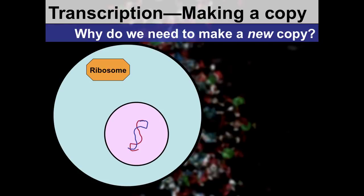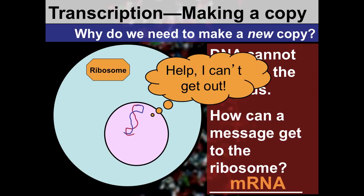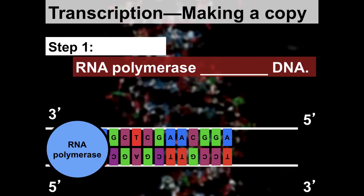Why do we need to make a new copy? DNA cannot leave the nucleus — the information for everything that happens within living things is kept safe inside the nucleus. So to get a message to the ribosome, where proteins are made, we use messenger RNA. We need to make a copy of the DNA as messenger RNA.